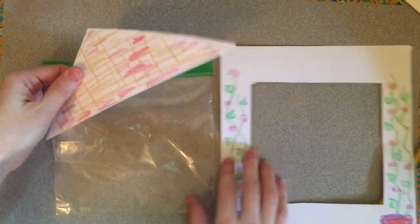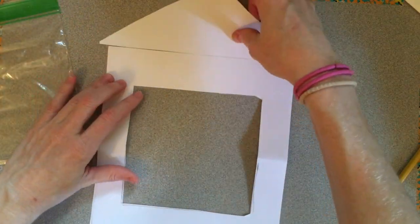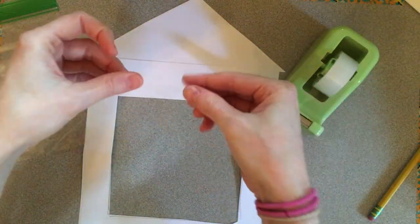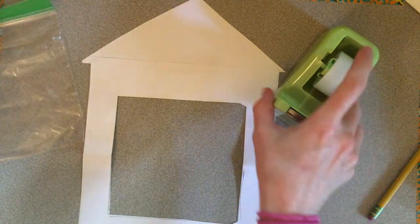Once you've finished coloring, it's time to assemble your greenhouse. You'll need your Ziploc bag, the frame of your greenhouse, and also the rooftop. And you'll want to go ahead and grab that tape or glue stick. First, put the roof and the framework of your greenhouse, the body with the window together, tape those.